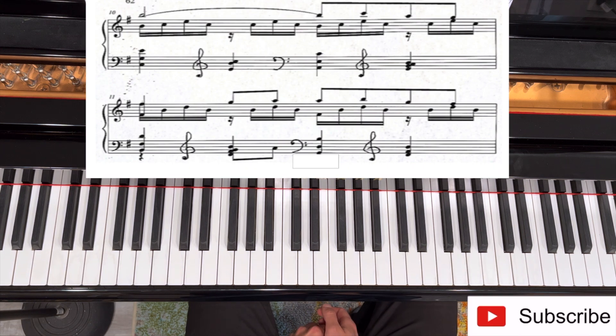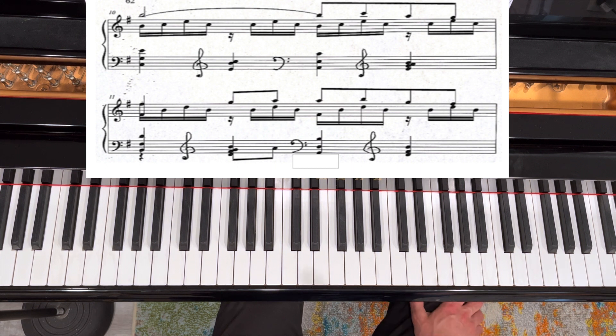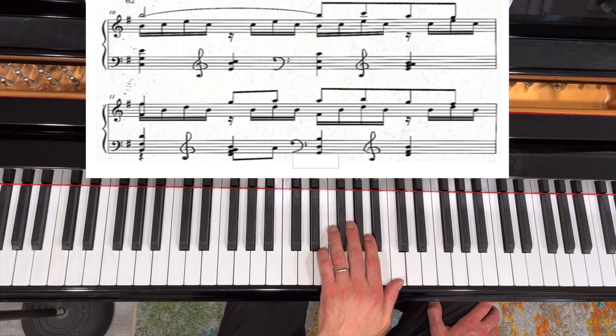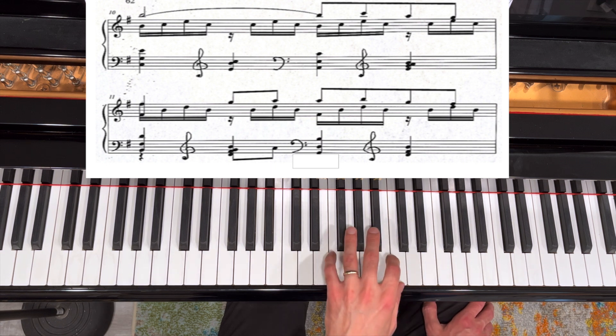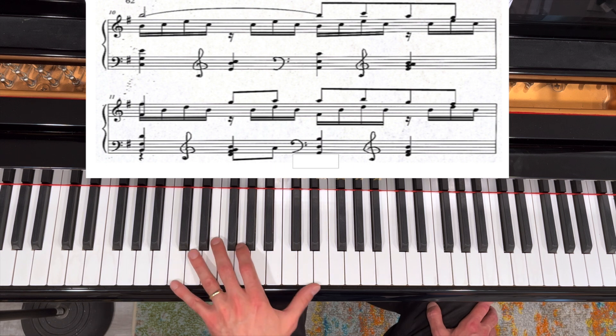Let's jump now to measure 62, 63, and 64. So it's the same idea. When my left hand is jumping up to those chords, I'm adding the right hand notes within those chords. So measure 62 and 63 will look like this.